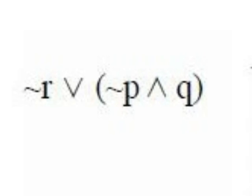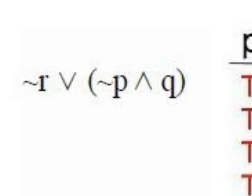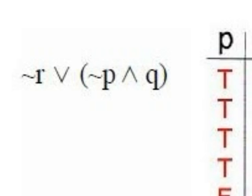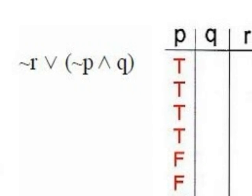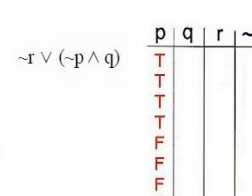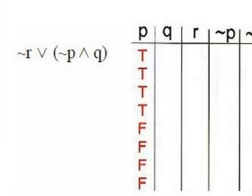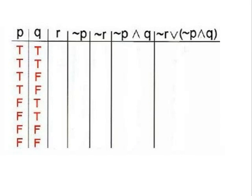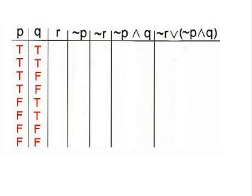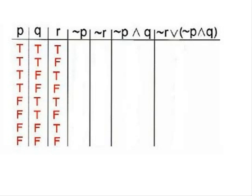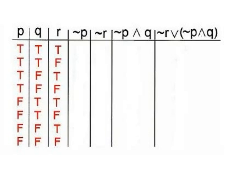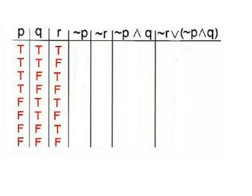Now since we have three letters, we will have more truth cases. The number of truth cases is 2 to the power of 3, which is 8. In the first column P, write 4 T's and 4 F's. In column Q, use the pattern of 2 T's followed by 2 F's, repeating: true, true, false, false, true, true, false, false. In column R, alternate true and false starting with true: true, false, true, false, true, false, true, false. Keep your letters in alphabetical order so you can compare your answers with the back of the book.